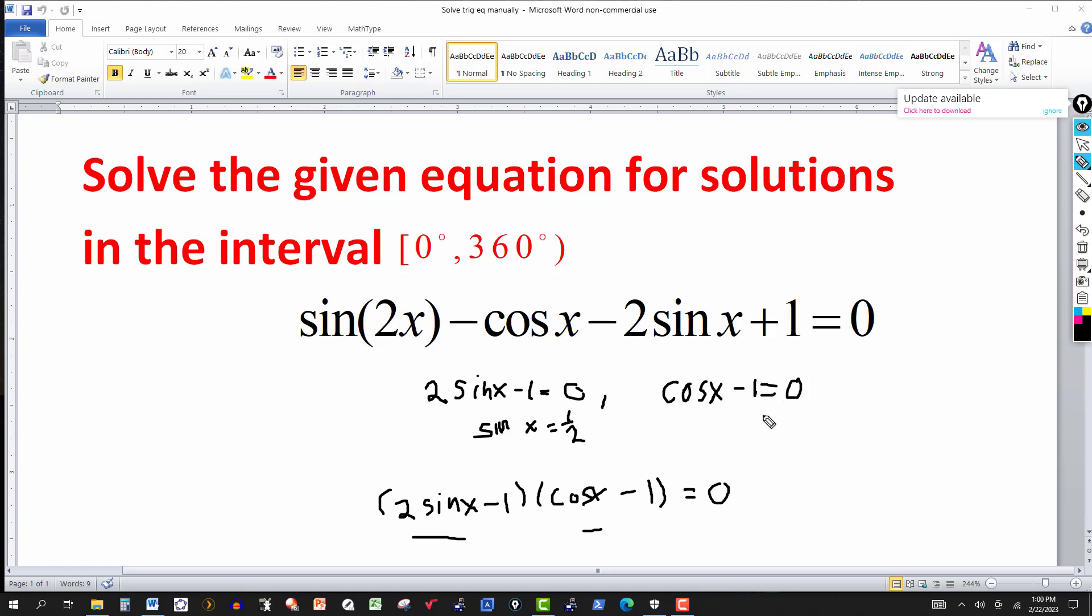And then on this one, add one to both sides. To isolate the cosine, I get cosine of x equal to one.